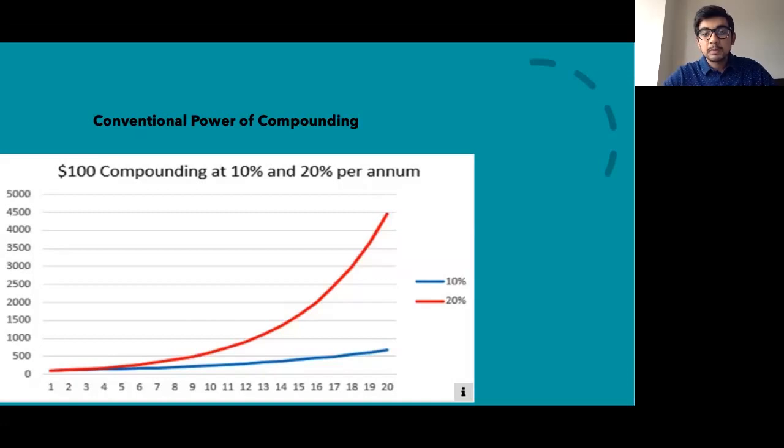So when people talk conventionally about the power of compounding, they speak about these two things, which is one that you get exponential returns in the long run, which is absolutely true. You can see how the graph increases at an increasing rate over time.